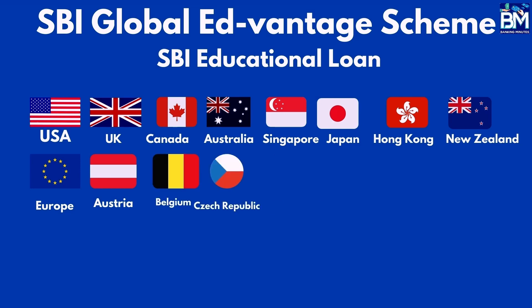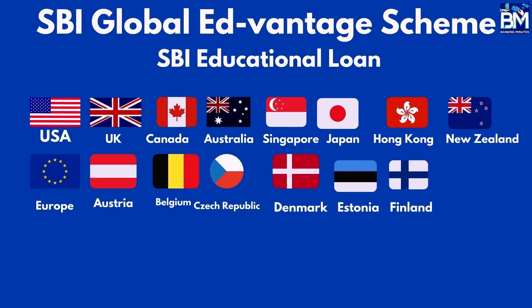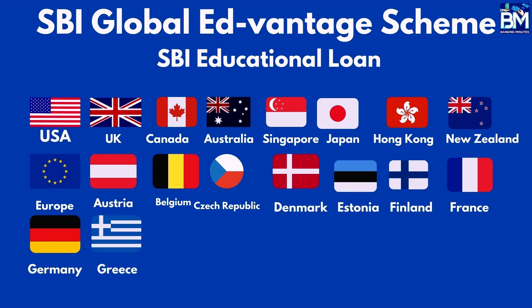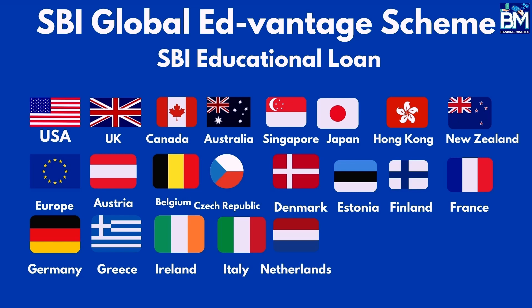The European countries in the list include Austria, Belgium, Czech Republic, Denmark, Estonia, Finland, France, Germany, Greece, Ireland, Italy, Netherlands, Norway, Poland, Portugal, Russia, Spain, Sweden, Switzerland, and United Kingdom.